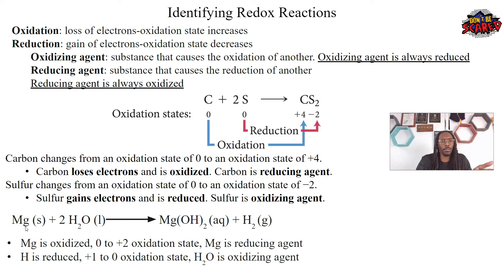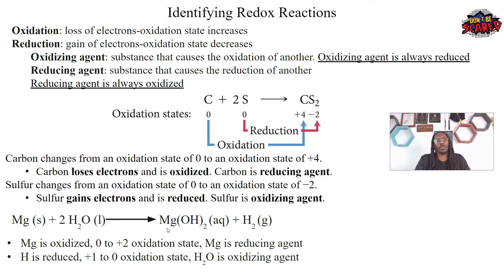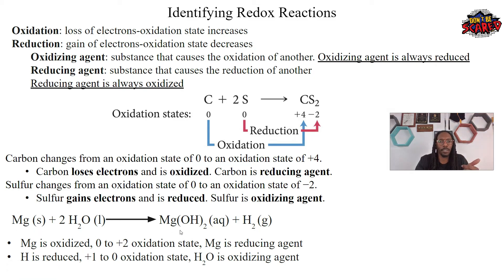On the product side, magnesium is an alkaline earth metal, so off the top of our head we know it has a plus two oxidation state. We go from zero to plus two — our oxidation state is increasing. If magnesium's oxidation state is increasing, magnesium is being oxidized. And since reducing agents are always oxidized, magnesium is my reducing agent.